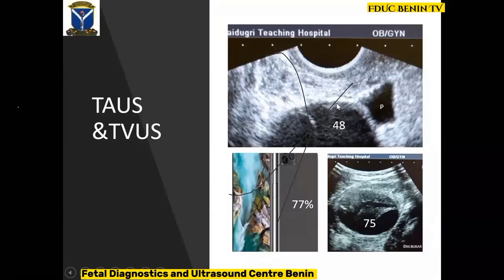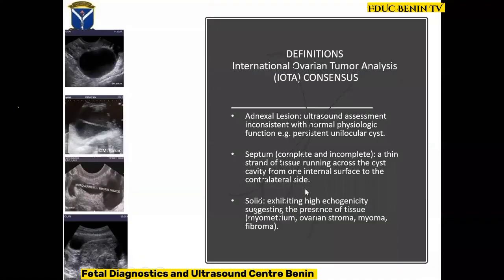About 48% of these images are transvaginal images with a few transrectal images using a transvaginal probe. The remainder are transabdominal images. Close to 80% of the images were obtained using handsets, so the quality will largely depend on the quality of the handsets, whether made in Edo, Maiduguri, or Wuhan. Before we go further, it is expedient that we classify ovarian lesions based on standard terminologies.